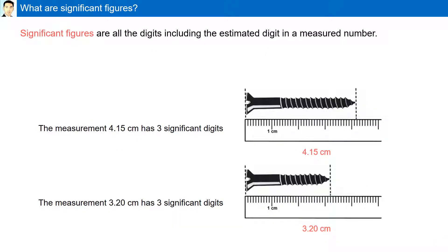Significant figures are all the digits including the estimated digit in a measured number. 4.15 centimeters contains 3 significant digits, while 3.20 centimeters also contains 3 significant digits. The zero at the end is also significant.